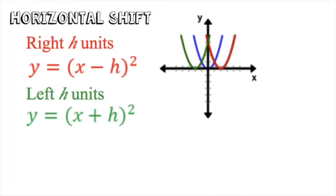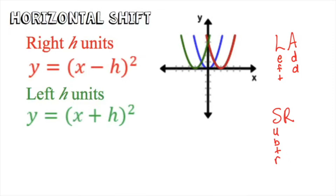For a horizontal shift, because h is inside the parentheses when we square it, it ends up being positive — so it's the opposite of what you think. When we are subtracting h, you're actually going to the right, and when you're adding h, you're actually going to the left. A little acronym to remember: 'La Señor' — left, add; subtract, right. If you remember that acronym, you'll remember the shifting.